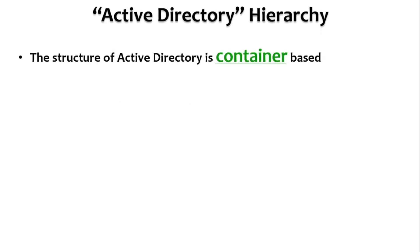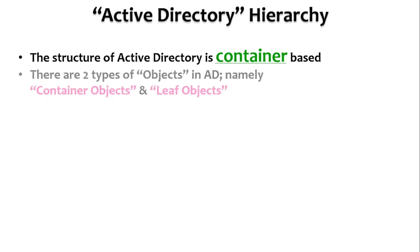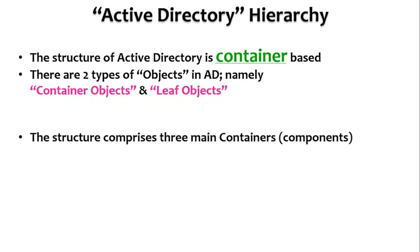The structure of active directory is container-based. There are two types of objects in active directory: container objects and leaf objects. For example, OU (organizational unit) or groups are container objects, and users, printers, and computers are all leaf objects. A container object may contain other container objects and leaf objects, while leaf objects are at the end and do not contain any other objects.